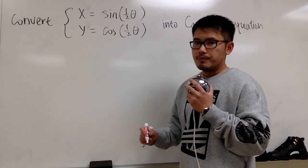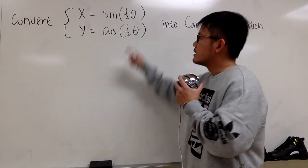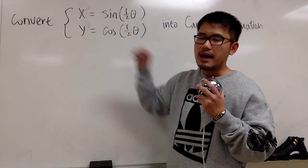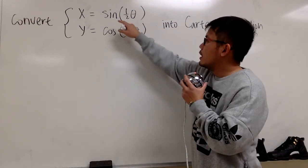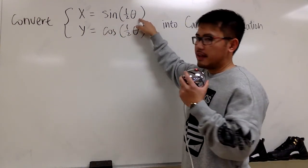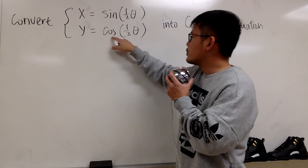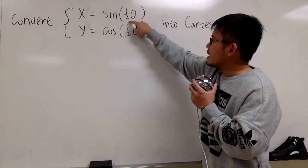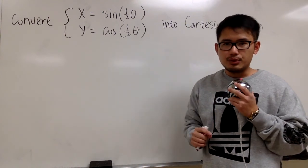So this is what we can do. Usually the strategy is solve for theta from x and then plug that into the other equation for y. But in this case, x equals sine of one-half theta, and y equals cosine of one-half theta. The important thing here is one-half theta, one-half theta are the same, and this is what we can do.